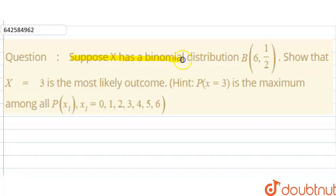Suppose X has a binomial distribution B such that X equals 3 is the most likely outcome. There is a hint: P(X=3) is the maximum among all P(X_i), where X_i equals 0, 1, 2, 3, 4, 5, 6. So X equals 3 is the most likely outcome.